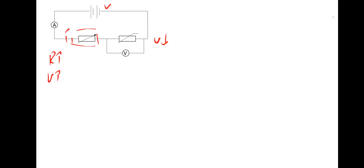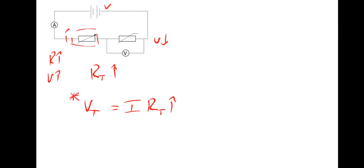Another way of thinking about it: if the resistance of the variable resistor increases, then the total resistance of the circuit will increase. If the total resistance increases with a constant voltage, the total current will decrease. So for the thermistor, where its resistance is constant, if the current going through it decreases, then the voltage will also decrease.